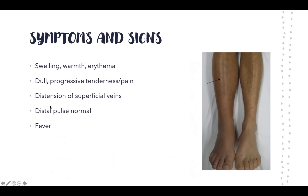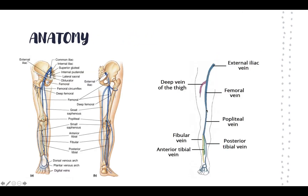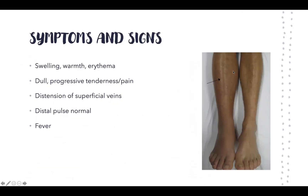Signs and symptoms: with a clot in the leg, the leg will be more swollen, warm, and red with erythema. The patient may have a dull, progressive tenderness or pain in the leg. Because the deep venous system is occluded, blood relies on the superficial veins to drain back to the heart, so you may see distension of superficial veins. Pulse should be normal as this affects the venous system. The patient may have a fever, and importantly, they might have none, some, or all of these symptoms.